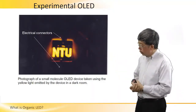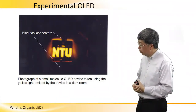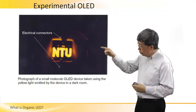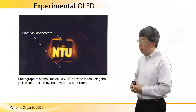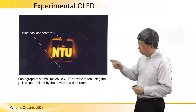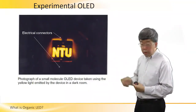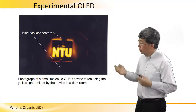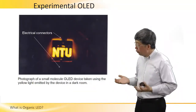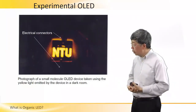Apart from the emissive part of the device, we can also see at the top and bottom two clips. These clips are the electrodes which are connected to the device, so that when a bias is applied, the device can illuminate and emit light.